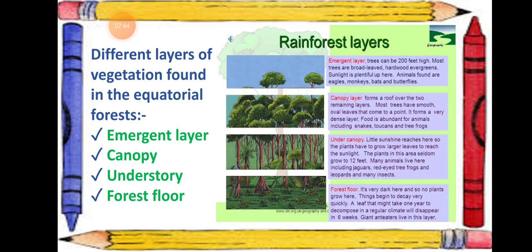The next layer is the under canopy. Very little sunshine reaches here, so the plants have to grow larger leaves so that they can absorb as much sunlight as possible. The plants in this area grow to about 12 feet, which is much shorter than those in the emergent and canopy layers. Many animals live here, including jaguars — a big cat — leopards, red-eyed tree frogs, and many insects.